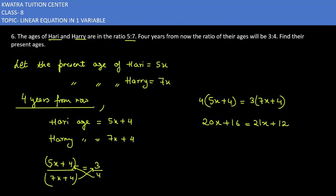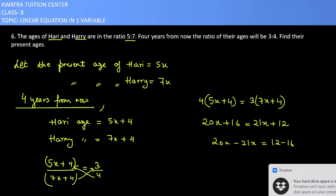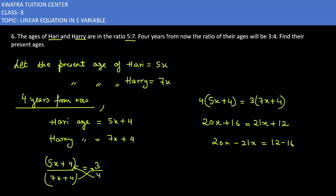Now, moving the x terms: 20x minus 21x gives minus x. And 12 minus 16 gives minus 4. So the value of x you are getting is 4.